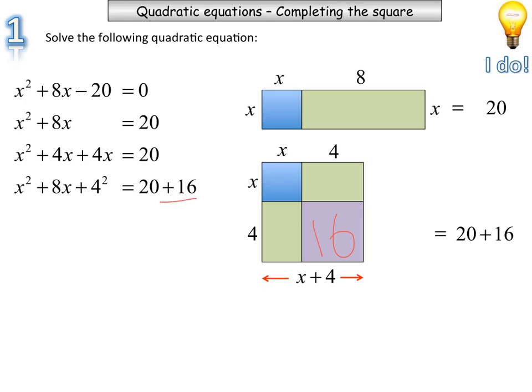So I'm going to add. So I've just added that purple area. I've added 16. I can't just add 16 to an equation without balancing that out. So that's why I have a plus 16 on the right-hand side. So I've added 16 there, which is a 4 squared, and I've added 16 on the right-hand side.